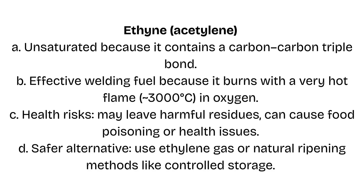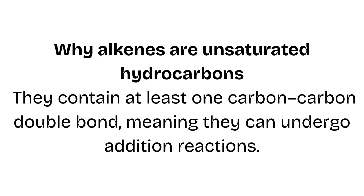D: Safer alternative — use ethylene gas or natural ripening methods like controlled storage. Alkenes are unsaturated hydrocarbons. They contain at least one carbon-carbon double bond, meaning they can undergo addition reactions.